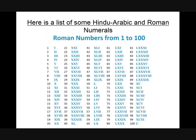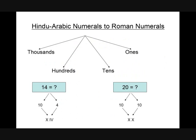Here is a list of some Hindu-Arabic and Roman numerals. To convert a Hindu-Arabic number into its Roman numeral, expand the given number into thousands, hundreds, tens, and ones place. For example, the expanded notation of fourteen is ten plus four. The Roman equivalent of ten is X and of four is IV. Placing the Roman symbol for four after the symbol for ten, we get XIV for fourteen. Similarly, twenty is expressed as ten plus ten, which equals XX.